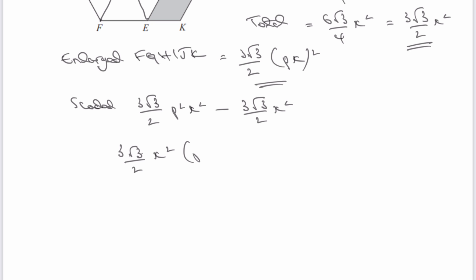then that would give us P squared minus 1. And if we want to write it in the same way as the question, that would be 3 root 3 over 2 P squared minus 1 multiplied by X squared.